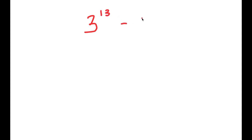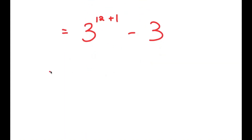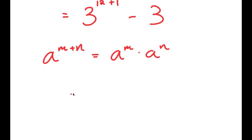In this video, I'm going to solve the problem 3 to the power of 13 minus 3. To solve this, I'll start by rewriting this as 3 to the power of 12 plus 1 minus 3. If I have something in the form a to the power of m plus n, this equals a to the power of m times a to the power of n. So I get 3 to the power of 12 times 3 to the power of 1 minus 3.